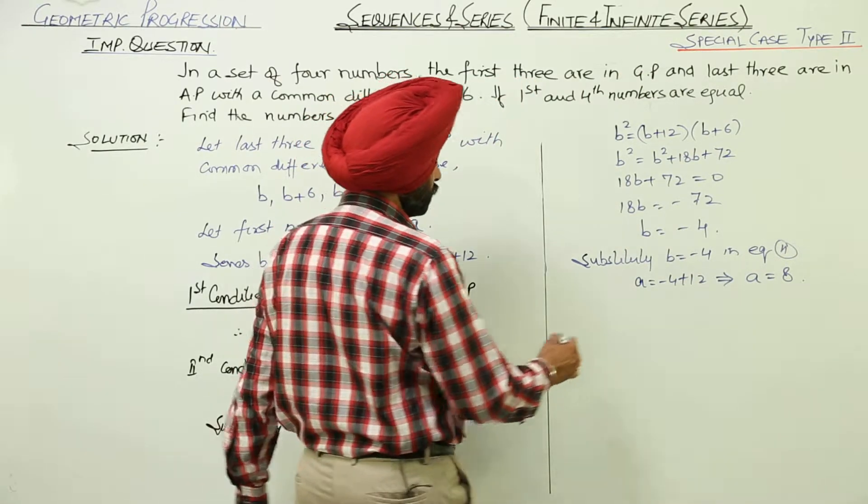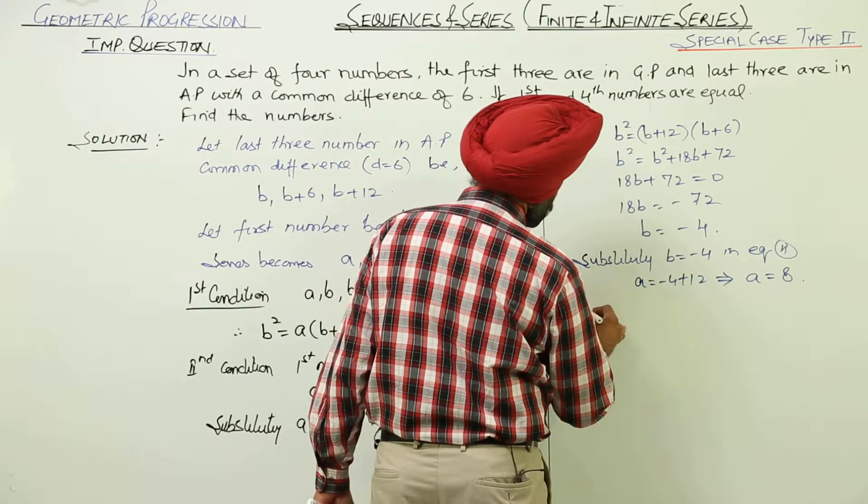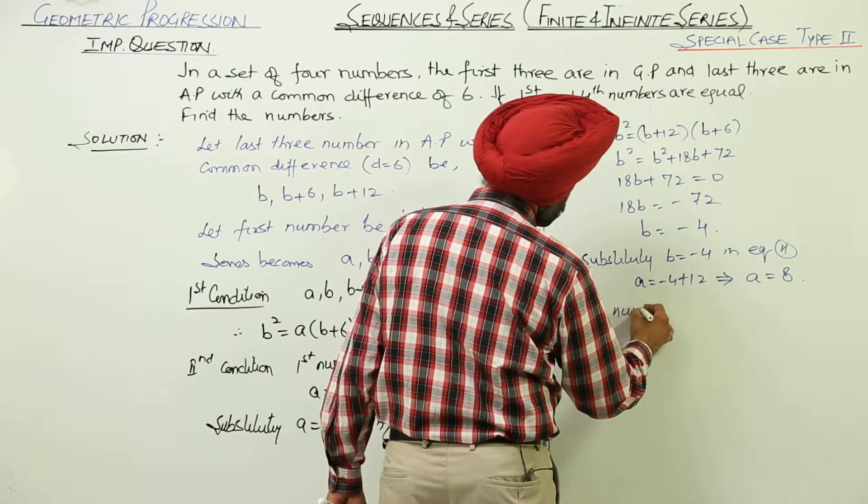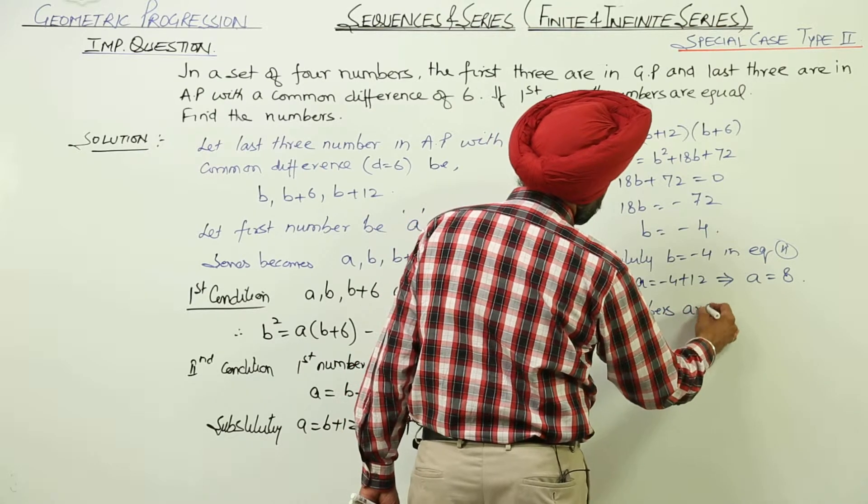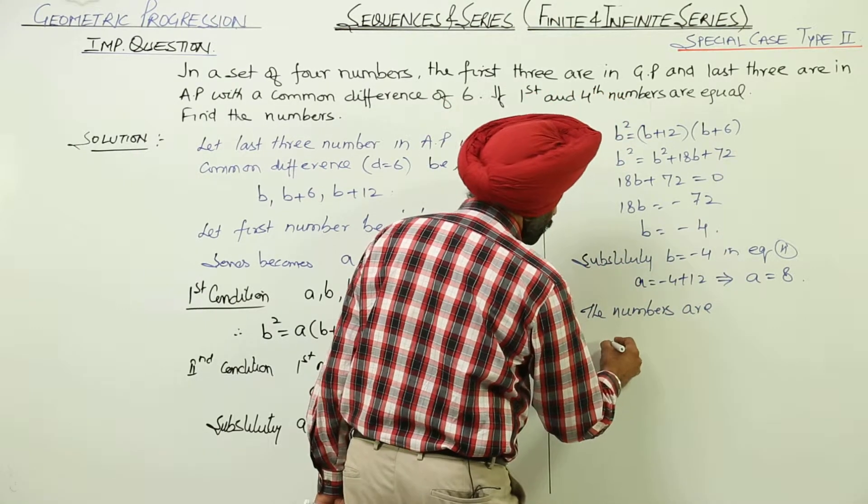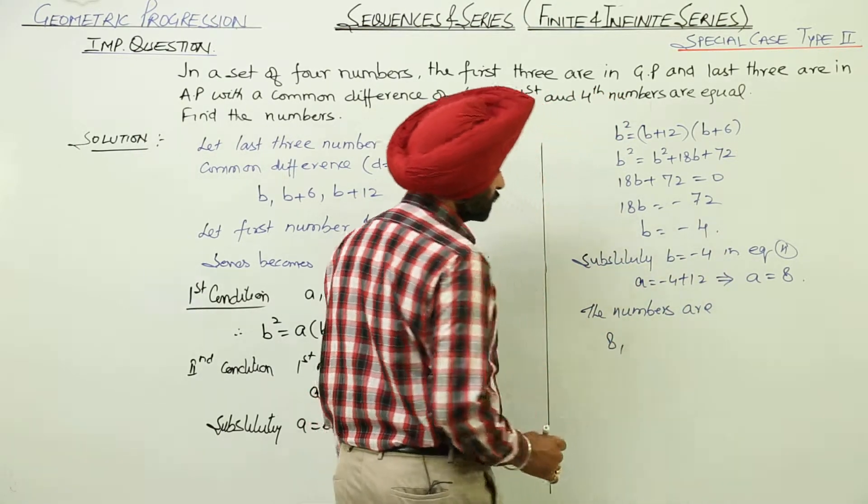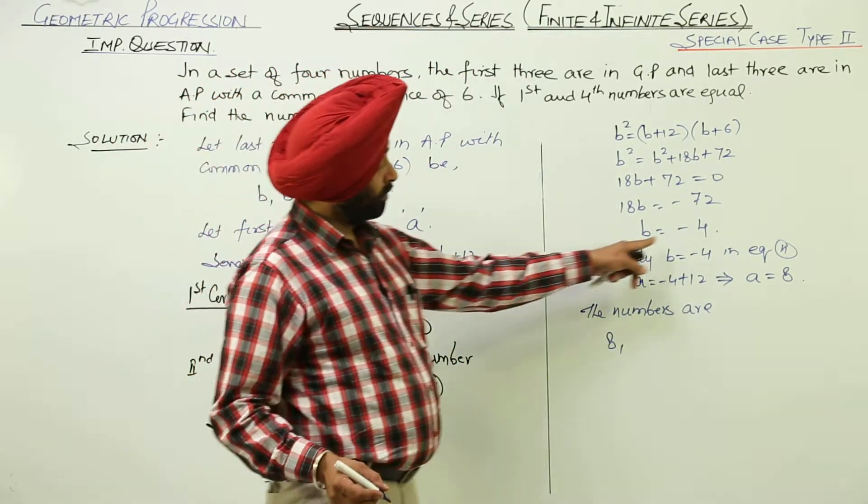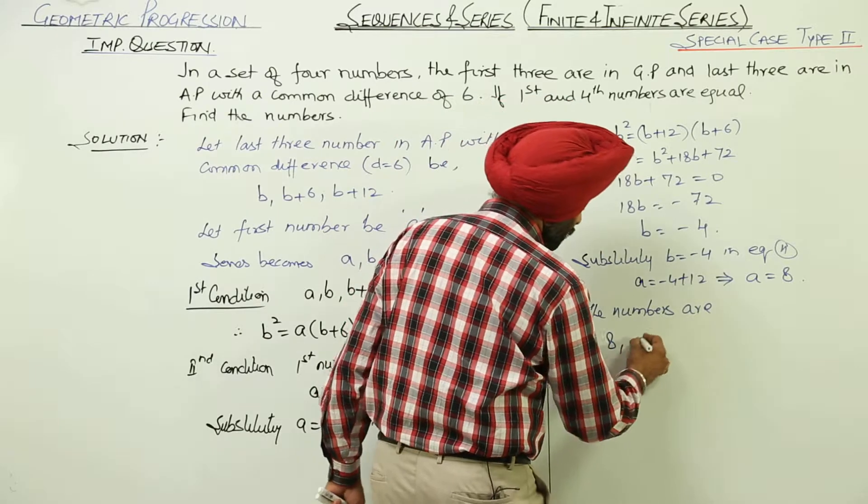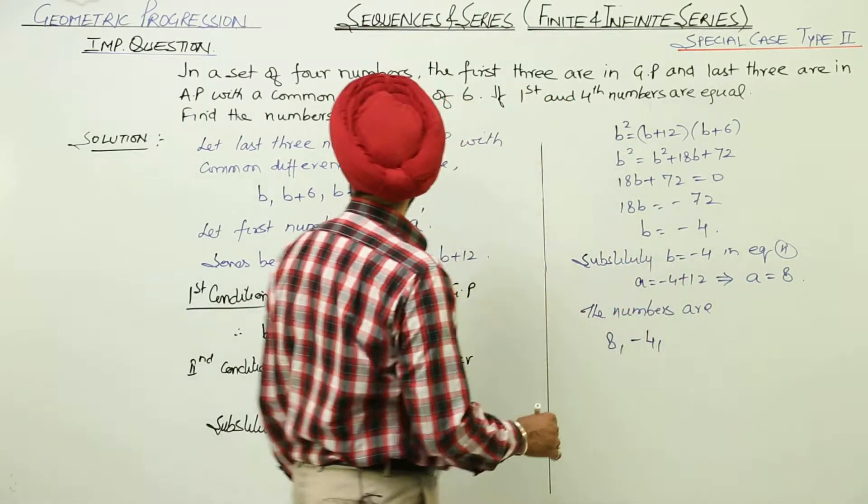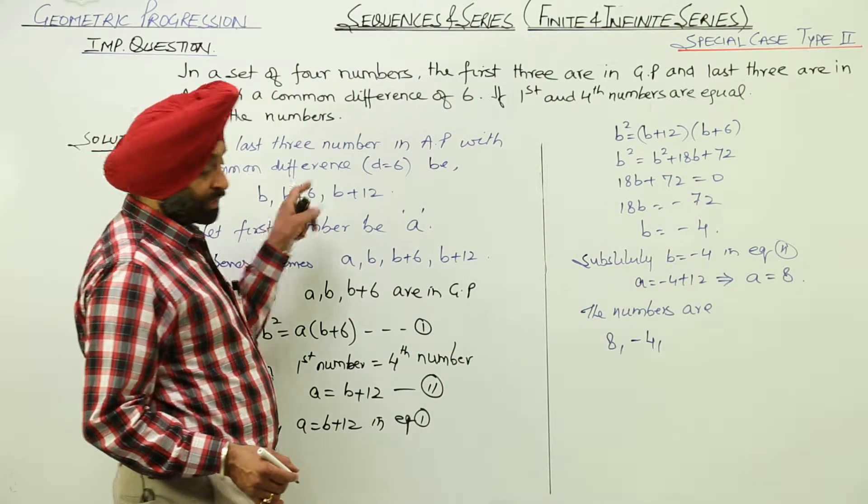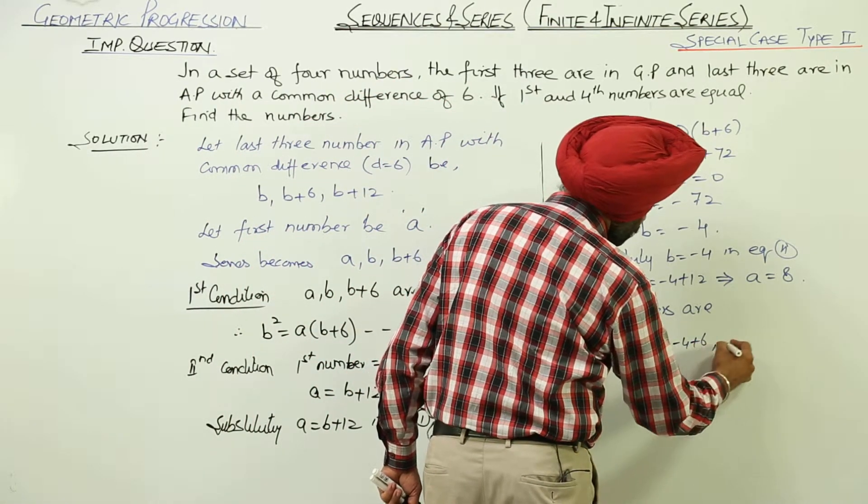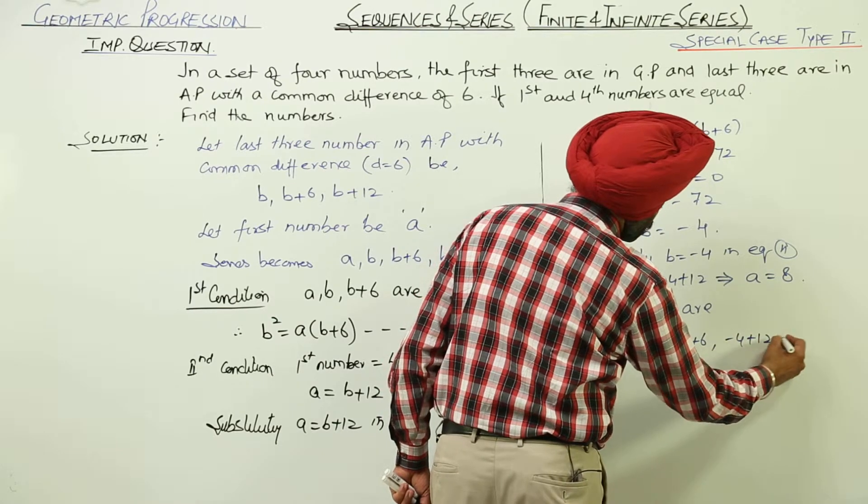First thing. Now, the numbers are 8 is the first number. Then we are having B. B we got as negative of 4. Negative of 4. Then we are having B plus 6 and then B plus 12.